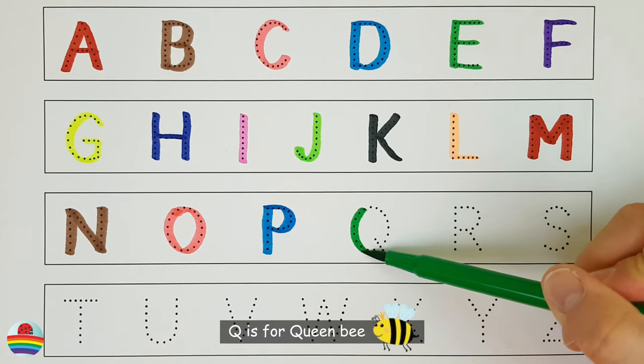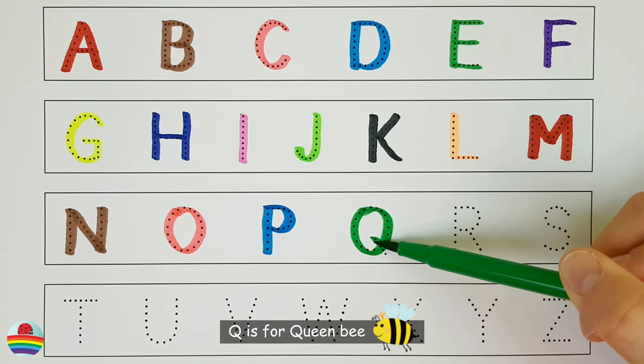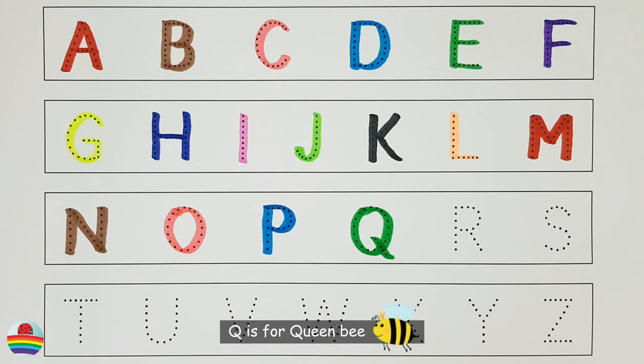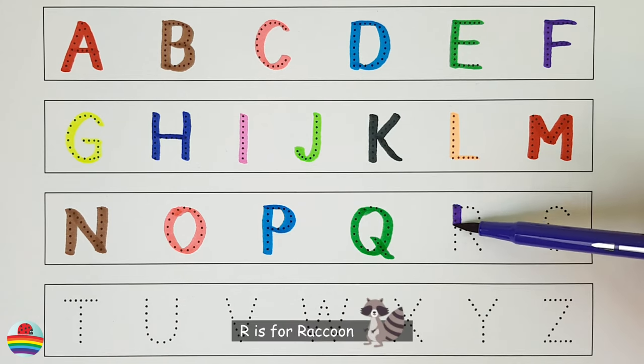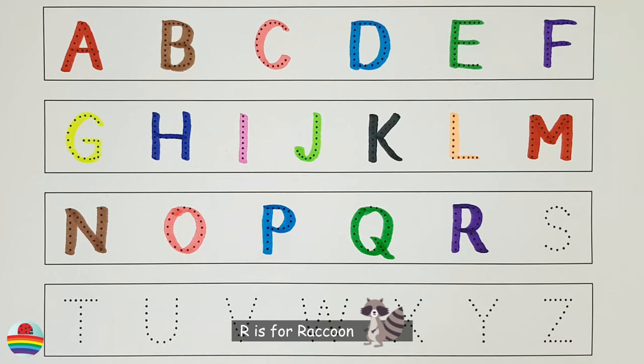Q. Q is for queen bee. R. R is for raccoon.